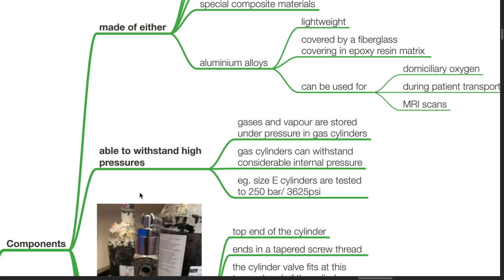Gas cylinders are able to withstand high pressures. Gases and vapors are stored under pressure in gas cylinders. Gas cylinders can withstand considerable internal pressures. For example, size E cylinders are tested to 250 bar or 3625 psi.